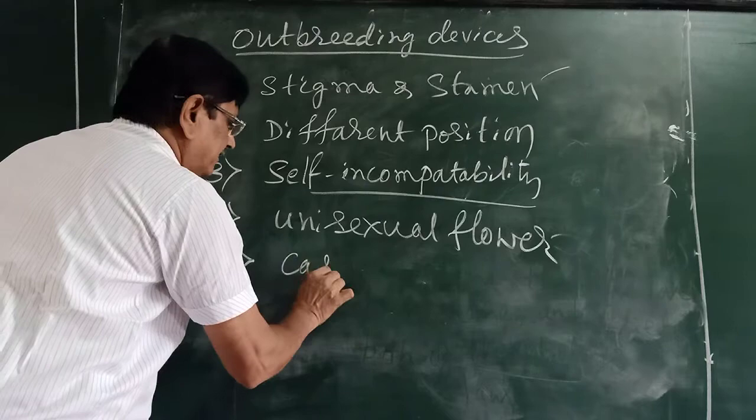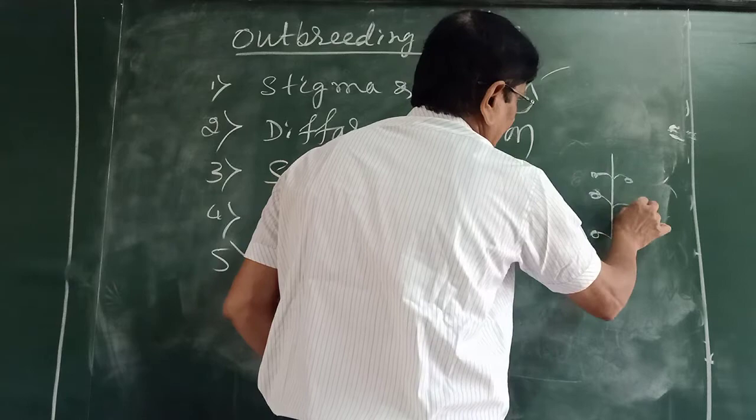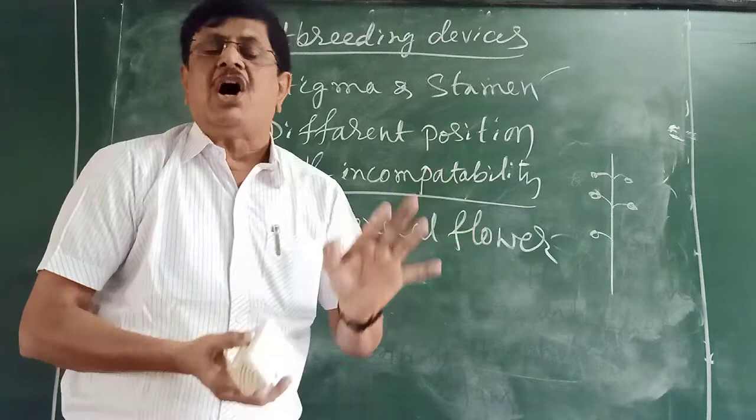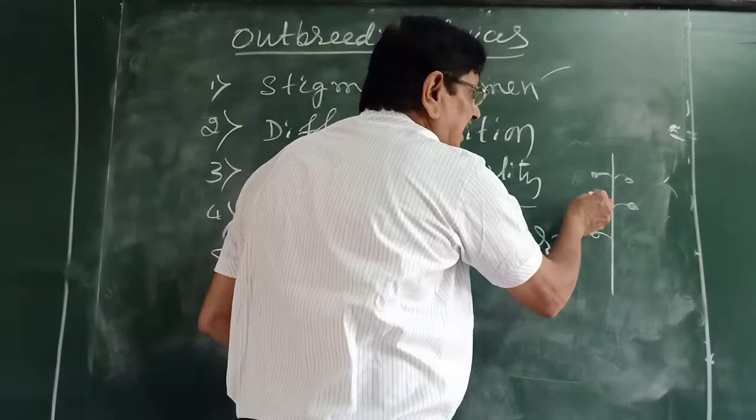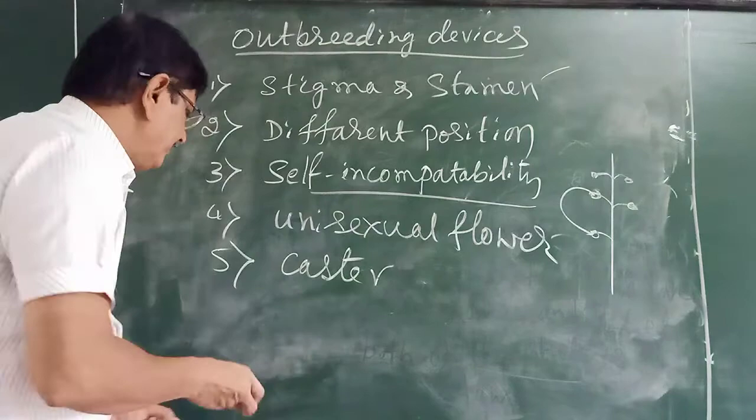Fifth outbreeding device: in castor plant, both male flowers and female flowers are present on the same plant. Here it avoids autogamy but supports geitonogamy — that is, pollination between different flowers on the same plant.